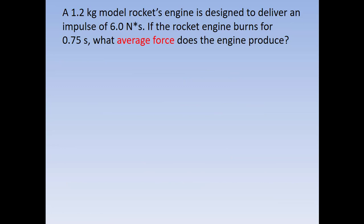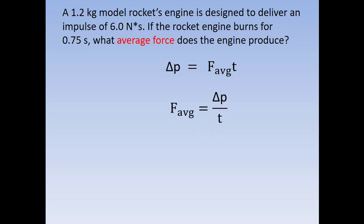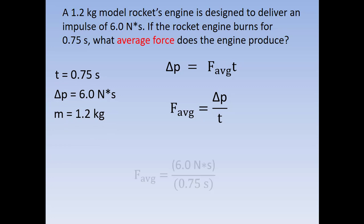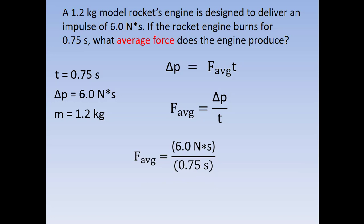We have a 1.2 kilogram model rocket engine designed to deliver an impulse of 6 Newton-seconds. If the rocket engine burns for 0.75 seconds, what average force does the engine produce? The equation is: impulse equals average force times time. We're solving for average force, so we divide by time: average force equals delta P divided by time. That's 6 Newton-seconds divided by 0.75 seconds, giving us an 8 Newton force.